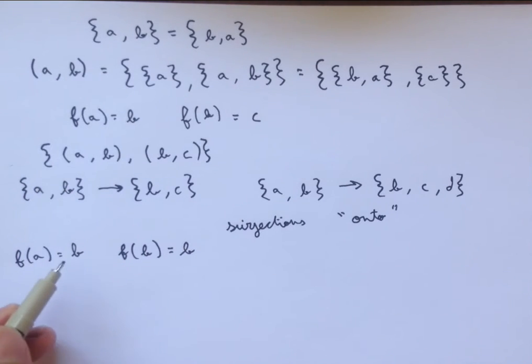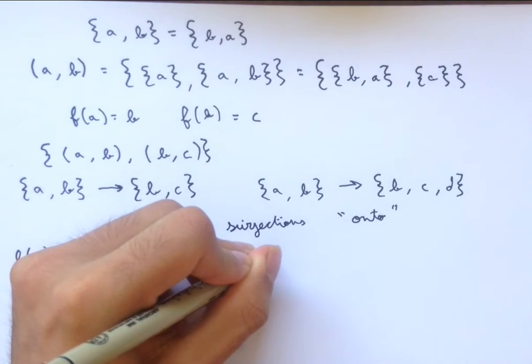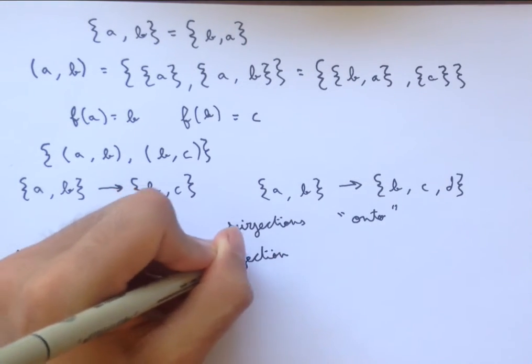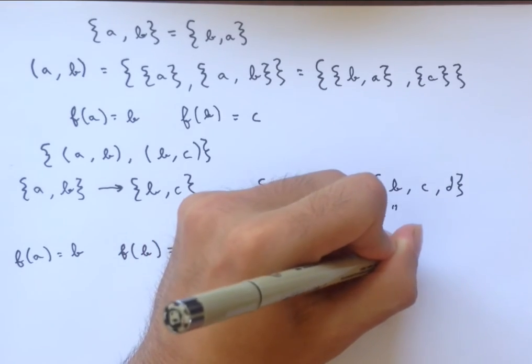So one example of a function that doesn't do this would be the function defined by F of A equals B, and F of B equals B. Now we see that both A and B map to the same element. And so if we have a function that doesn't have any of this, and so each element maps to a unique element, we have what we call an injection. And we describe these functions as being 1 to 1.